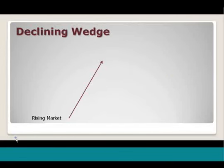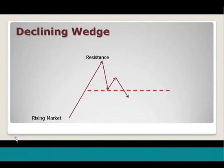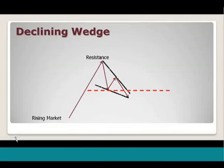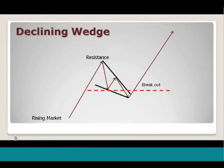With a declining wedge, we have our rising market. We have a pullback off of a resistance, down into a support, then a rally and a break below — it almost brings people in thinking the market's going to sell off. We create that wedge-like pattern, and then the price breaks out with increasing volume, generally supported by a continuation of momentum.